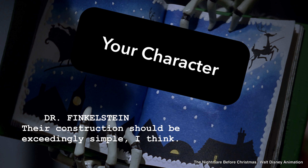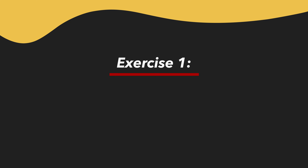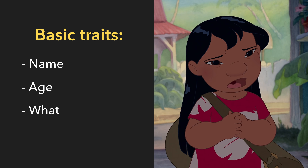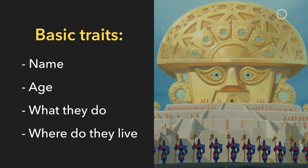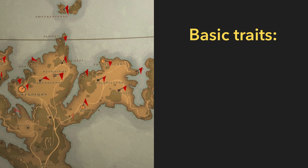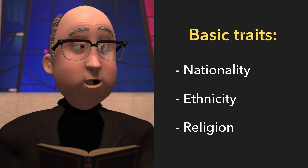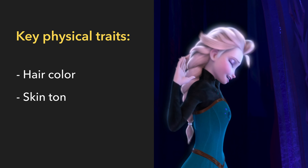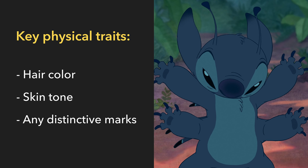Their construction should be exceedingly simple. Let's begin by making a list of your character's basic traits: name, age, what they do, where they live. If it's important to the story, include their nationality, ethnicity, religion, or any key physical traits like hair color, skin tone, or any distinctive marks.